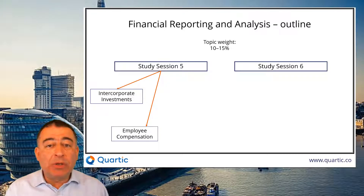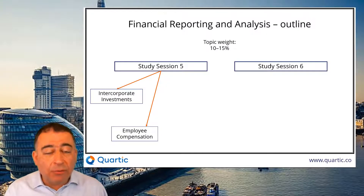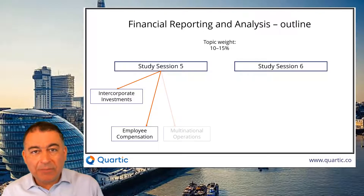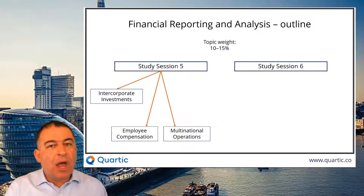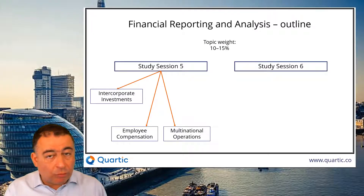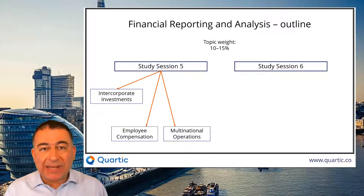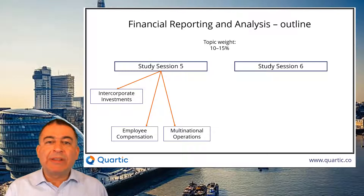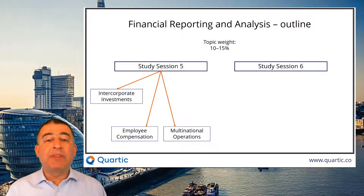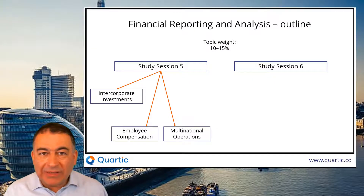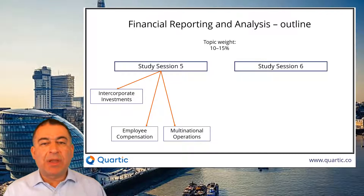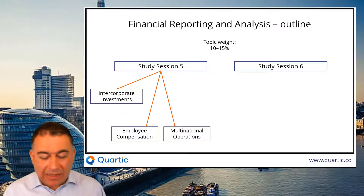We go through worked examples, and through that, hopefully you can become familiar with how this reading works. The third reading is multinational operations — one company owns a subsidiary that reports in a different currency. How do you translate that currency into the parent company's reporting currency? We see two methods: the current method and the temporal method. Although they look a bit fiddly to start with, with a bit of practice they do become fairly straightforward and mechanical.